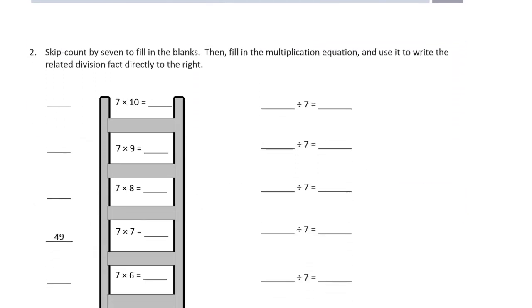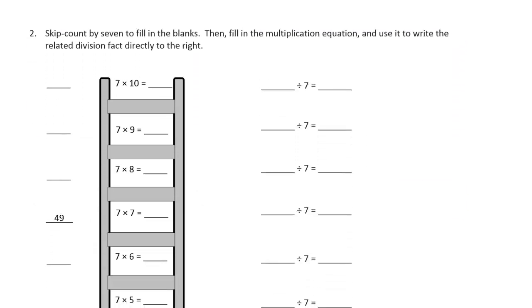And we can use that on the second page. Skip count by 7 to fill in the blanks. Then fill in the multiplication equation and use it to write the related division fact directly on the right. So we're working from left to right across the page.